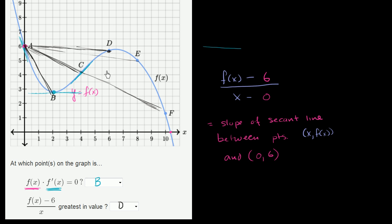and it looks like f(x) is like 5 and 1 half or something. So this will turn into f(6), which is 5 and 1 half, or maybe it's even less than that, 5 and 1 third or something, minus 6 over 6 minus 0. That's how we'll maximize this value. This is the least negative slope of the secant line.